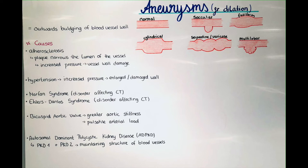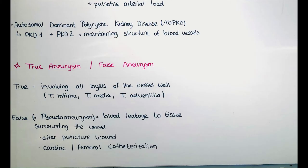Now I want to talk about the difference between true aneurysms and false aneurysms. A true aneurysm involves all layers of the vessel wall — the tunica intima, the tunica media, and the tunica adventitia. A false aneurysm, or pseudoaneurysm, is when blood leaks out into the tissue surrounding the vessel. This can happen after a puncture wound — for example by stabbing or gunshots — but also by cardiac or femoral catheterization. It's important that after such a procedure the patient is closely observed for aneurysm formation.